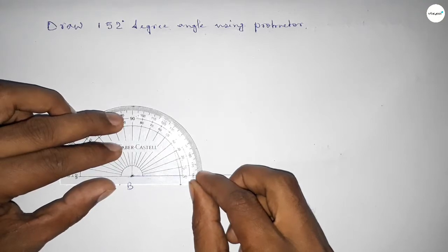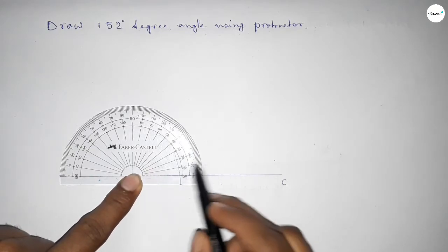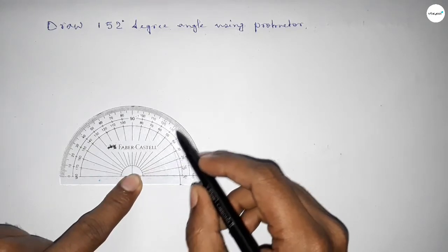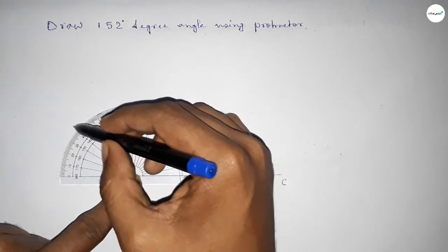So this is starting angle: 0, 10, 20, 30, 40, 50, 60, 70, 80, 90, 100, 110, 120, 130.